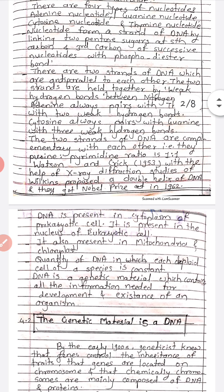Watson and Crick in 1953, with the help of X-ray diffraction studies, proposed a double helix model of DNA. Who discovered the double helix structure of DNA? Watson and Crick in 1953.